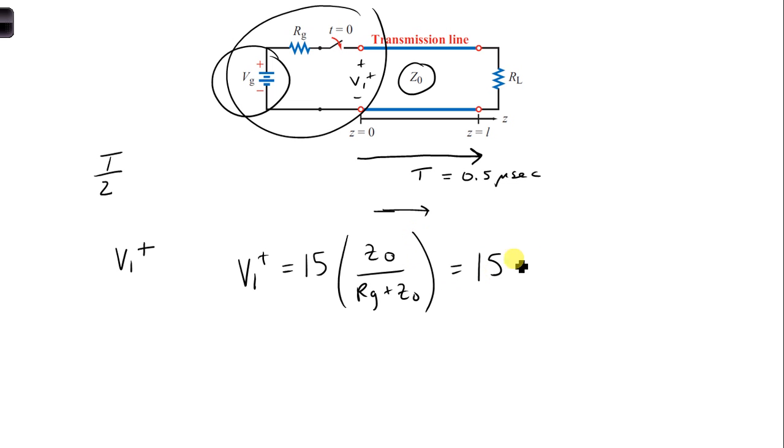So now we can plug in numbers that are given. Z naught is 50. RG is 75. And once we simplify, we get 6 volts. So now we know how far it has propagated.